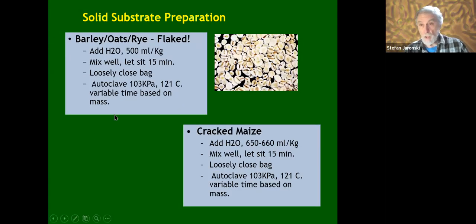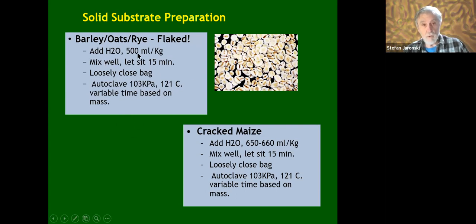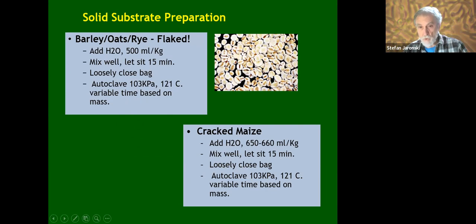For North America and Europe, barley is cheaper and convenient — you just add water, mix, and autoclave. Cracked maize also works well: just add water, mix, let it sit a bit so the moisture is absorbed, loosely close the bag, and autoclave.